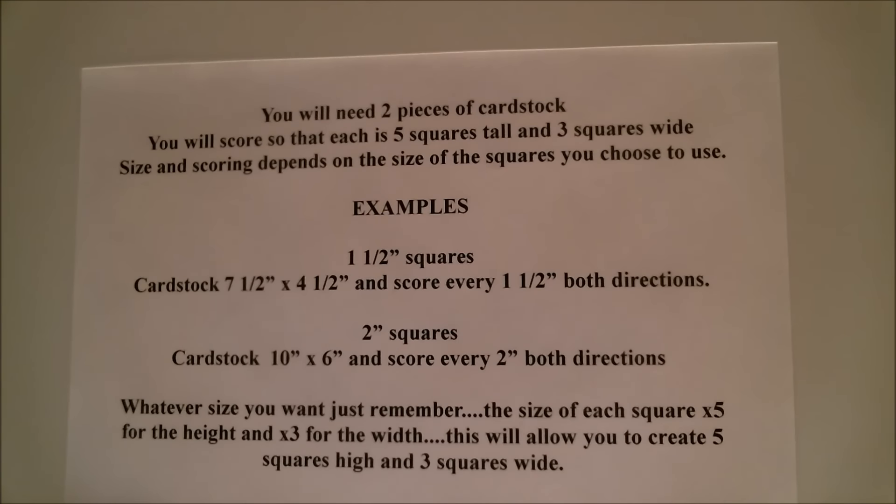Here are the examples. We just did one and a half inch squares, so the cardstock was seven and a half by four and a half, and we scored every inch and a half both directions. But if you wanted two inch squares, then your cardstock would be ten inches by six inches and scored two inches both directions. As you can see, five times two is ten, so there's your five squares high, and three times two is six, so there are your three squares wide. You will always cut it the same way as we cut it, so the cutting doesn't change, it's just the size of your cardstock. If you wanted to make one that's really tiny with one inch squares, then it would be five inches by three inches. I'm pretty sure you get the math and maybe you can come up with your own sizes, maybe you want something gigantic.